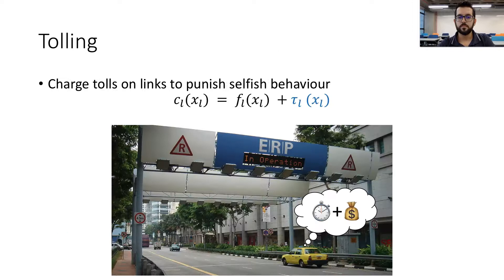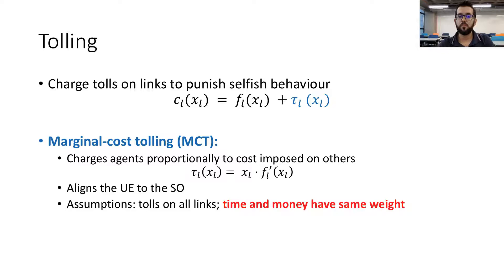Tolling approaches have shown useful in minimizing congestion and have been deployed for several years. Here, the cost of each link includes not only the travel time, but also the toll value. Drivers then consider both aspects when choosing their roads. In this work, we employ the concept of marginal cost tolls in particular. Such a scheme charges agents proportionally to the cost imposed on others, which is equivalent to penalizing selfish behavior. Marginal cost tolling is known to align the user equilibrium to the system optimum — we call this a system efficient equilibrium, since it is an optimum from which no agent wants to deviate.